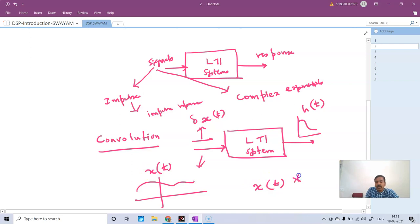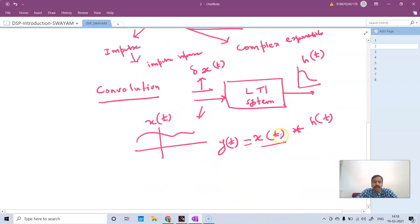You will perform an operation called convolving the input signal with the impulse response to find the output response of the system. Mathematically, we will be learning about this. You will also learn concepts like eigenvalues and eigenfunctions in this course.